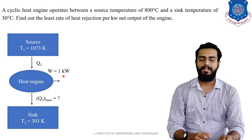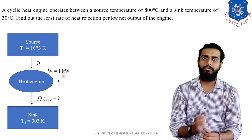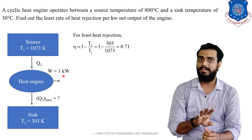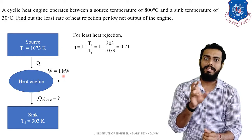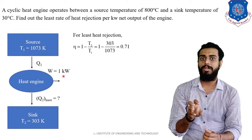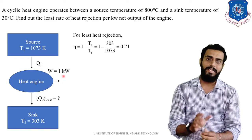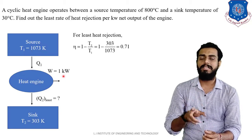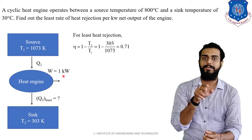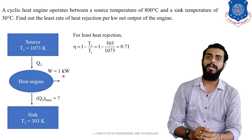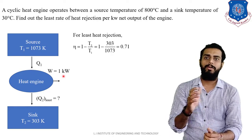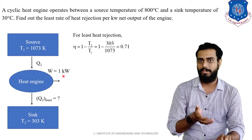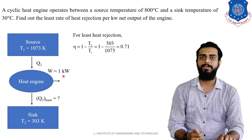For least heat rejection, we use the Carnot efficiency formula: eta = 1 − T2/T1. For the Carnot cycle, you can also write efficiency as 1 − (heat rejected / heat supplied). Since this is a reversible cycle, the heat transfer ratio equals the temperature ratio. Substituting T2 = 303 K and T1 = 1073 K, we get efficiency equal to 0.71.